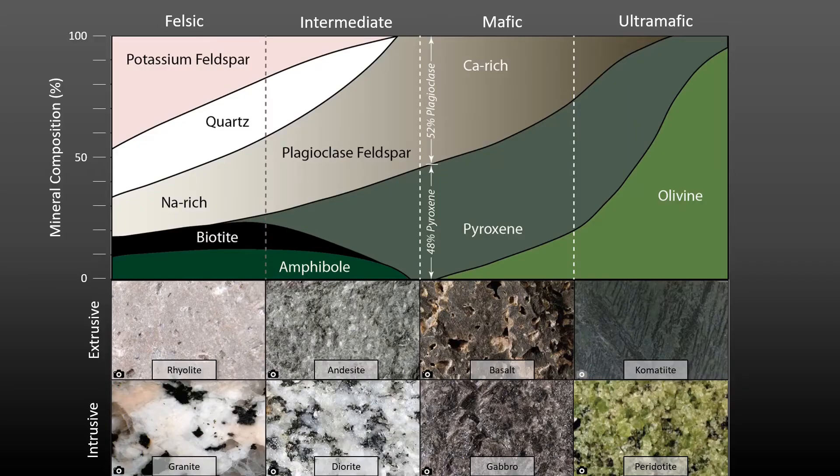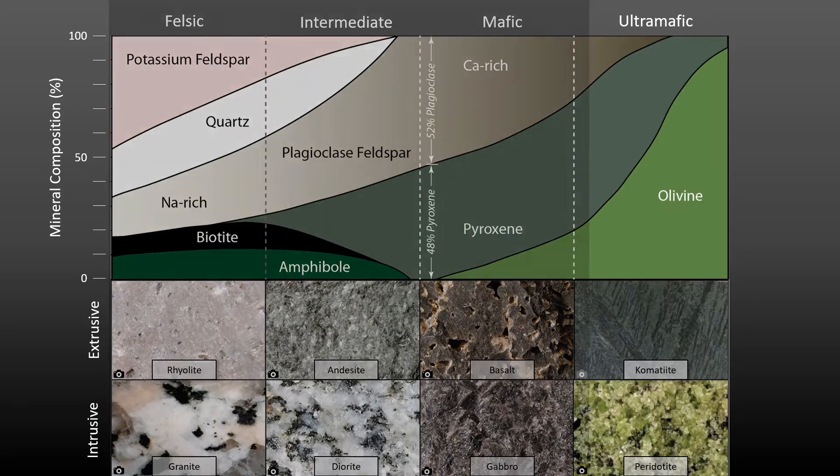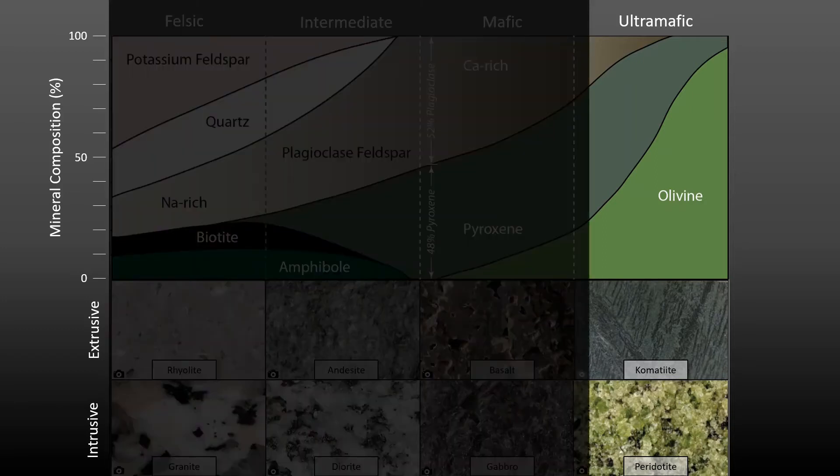Now I want to take a second to explain the chart that you saw on my computer monitor. This chart shows the generalized full range of mineral compositions in the different magma groups. Under the chart are some close-up photos of actual extrusive and intrusive rock samples in each group. So starting with the far right, we're looking at the ultramafic group, which is mostly made of olivine, but also has some pyroxene minerals and can have calcium-rich plagioclase. Olivine is a green mineral, but pyroxene and calcium plagioclase are pretty dark, giving ultramafic rocks a dark green color.